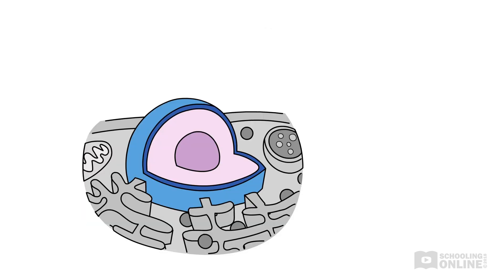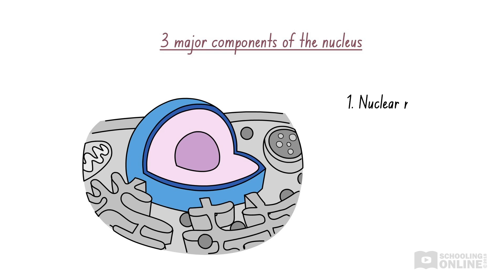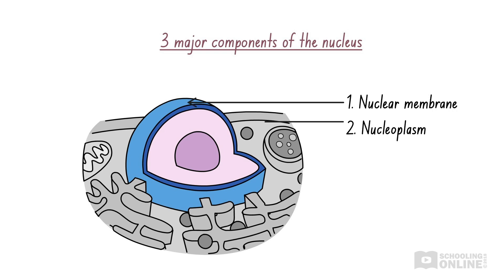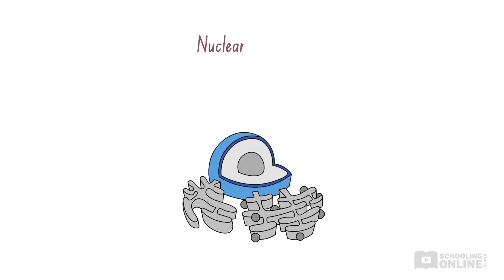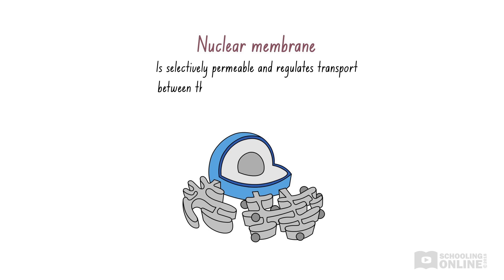During your studies, you'll need to remember the three main components of the nucleus: the nuclear membrane, nucleoplasm and nucleolus. Let's begin with the first component, the nuclear membrane. A porous nuclear membrane surrounds the nucleus — it consists of an outer and inner membrane. The nuclear membrane is selectively permeable because the pores regulate the transport of substances between the nucleus and the external environment.